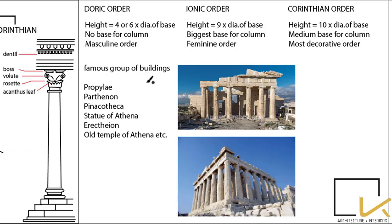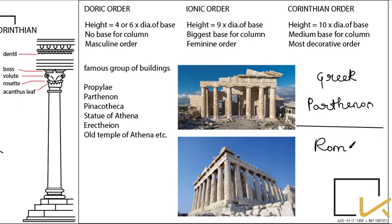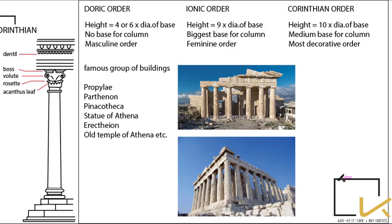Famous Greek buildings — including the Propylaea and the Parthenon — are all situated in close proximity. An important distinction: in Greek architecture there is the Parthenon, while in Roman architecture there is the Pantheon. They are completely different buildings, so don't get them confused.